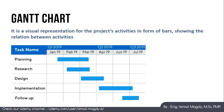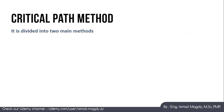The Gantt chart is a visual representation method to show project activities in a simple bar format and to show the relation between activities. It is mainly used to summarize progress reports, show the status of the project, and present it in a high-level format.